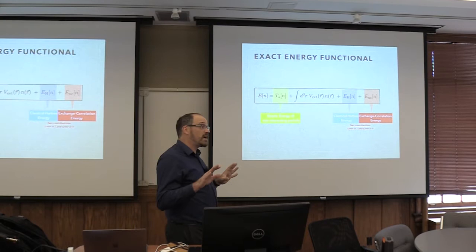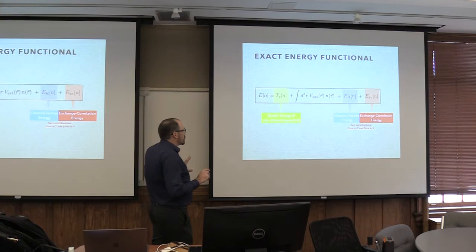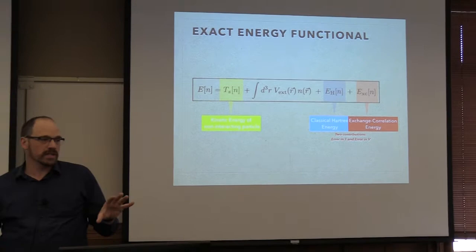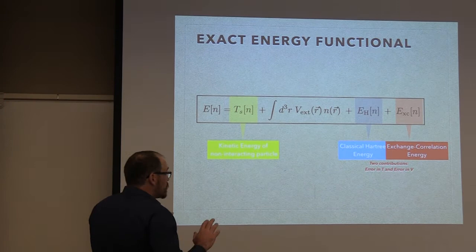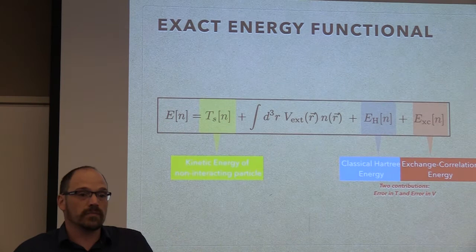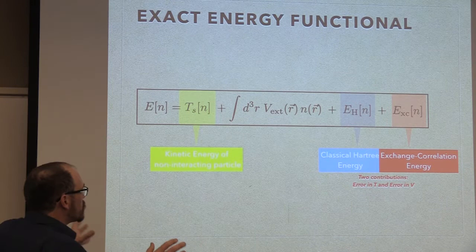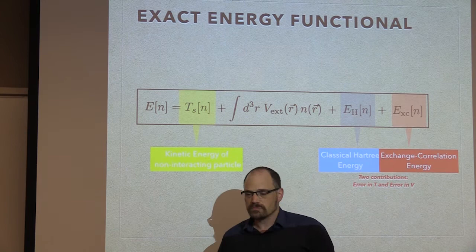The idea of Kohn and Sham was to separate the total energy into a part that we know how to calculate — that would be the independent electrons. We are going to recreate an equivalent problem with the same solution for the density, but with different interactions. We create a new potential, which at the end of the day comes from what's called the exchange-correlation. The main part numerically will be the kinetic energy, which is a function of the density.